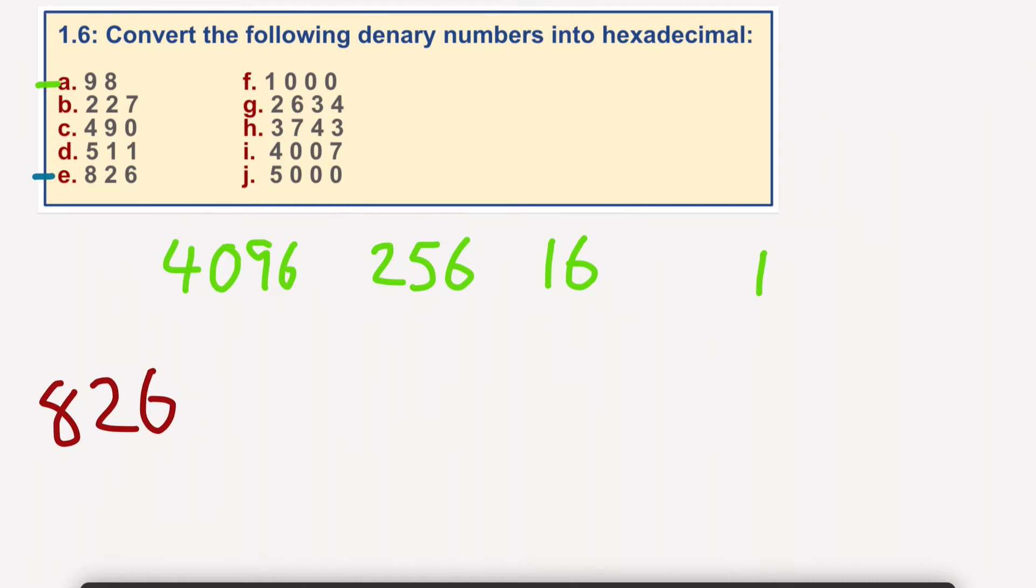So 3 times 256 would be 768. So I'll put a 3 in there. And that's 768. Well, let's take that away from that. 826 take away 768. That would give us a total of 58.